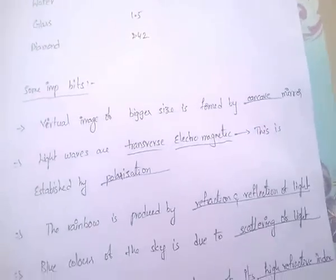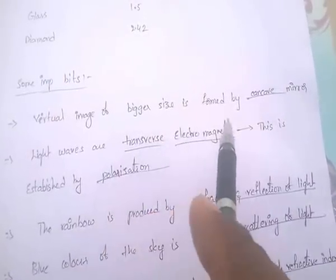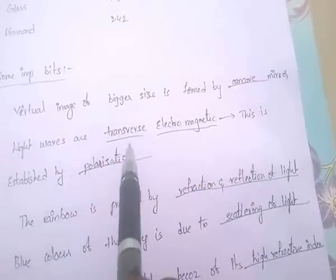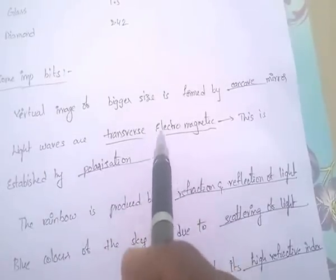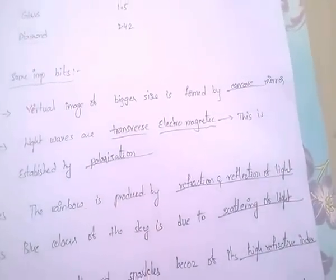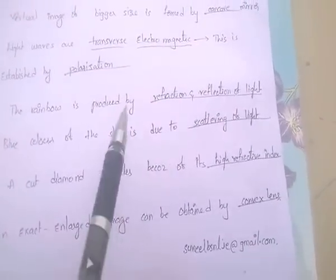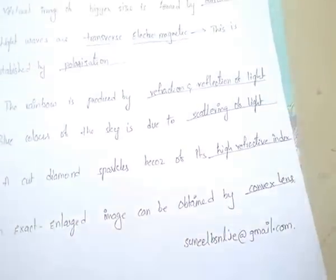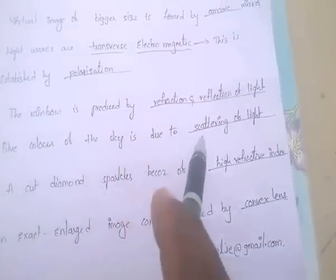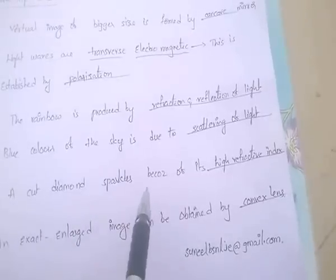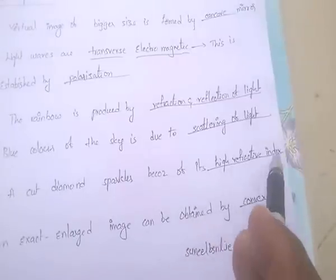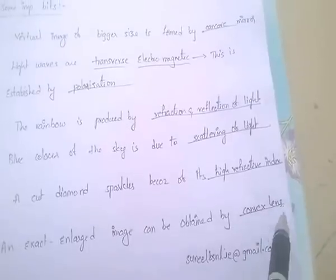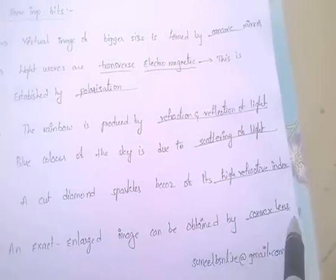Some important points: a virtual image of bigger size is formed by a concave mirror — very, very important. Light waves are transverse waves, and these transverse electromagnetic waves are established by polarization. The rainbow is produced by refraction and reflection of light. The blue color of the sky is due to scattering of light. A cut diamond sparkles because of its high refractive index. An exact enlarged image can be obtained by a convex lens.